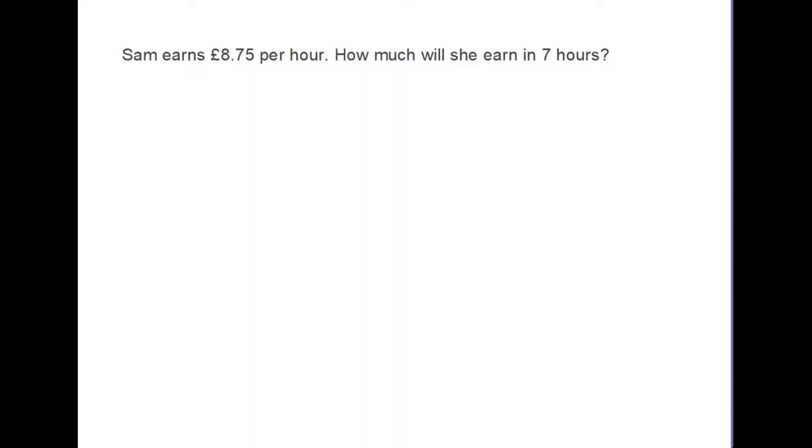So let's start then with a question that on the face of it doesn't seem to have much to do with formula. It simply says that Sam earns £8.75 per hour and it then asks us how much will she earn in seven hours. Well there is indeed a formula there because we have to follow a rule, which is what a formula is. We have to follow a rule to work out what Sam is earning. We are looking to find out what her total earnings are.